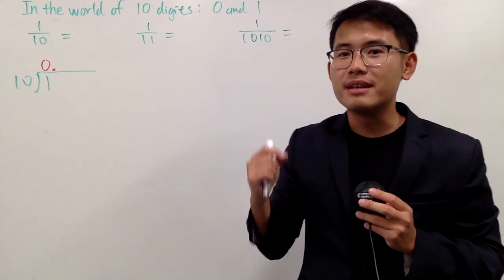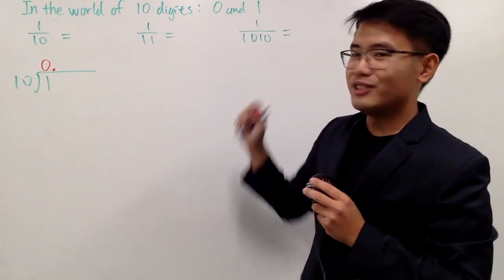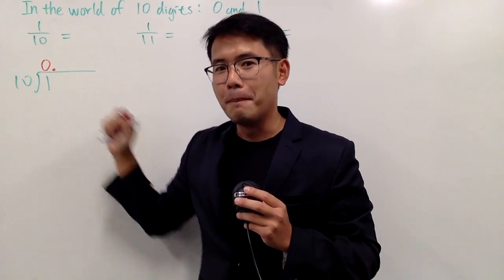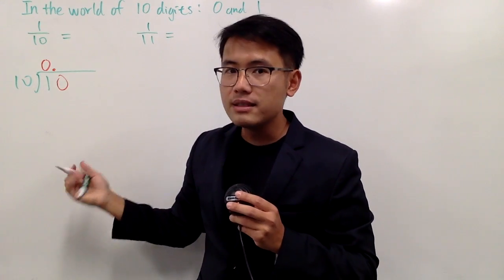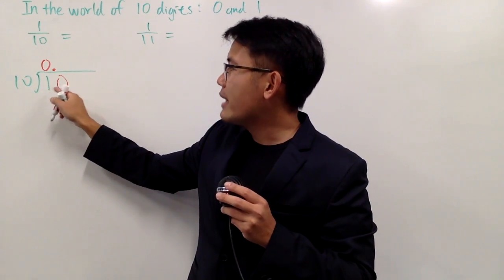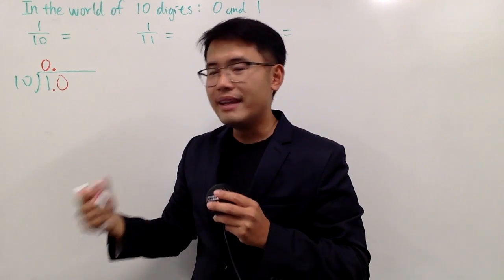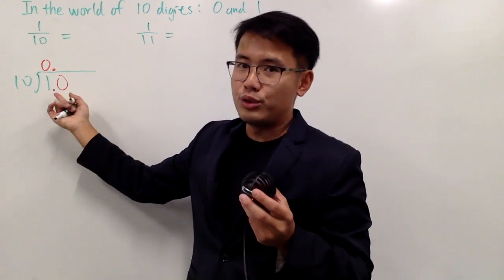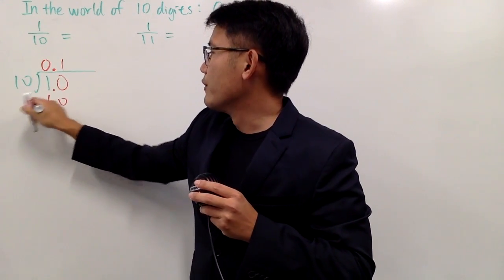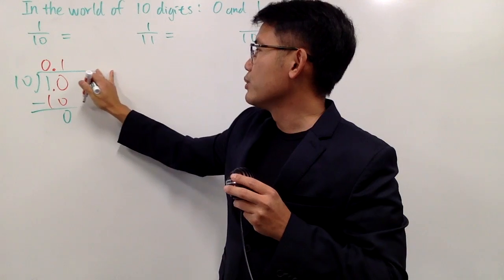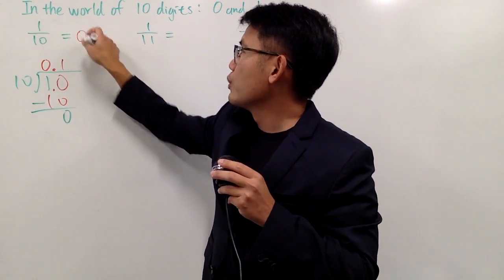You don't call this the decimal point, because decimal means you have 10 digits to work with. Here we only have 2 digits, so this is the binary point. When you put down this point, you can put a zero right here. What you are saying is 1.0 is the same as the original 1. Then 10 goes into 10 — it's just 1 time. 1 times 10 is 10. The remainder is 0, so we are done. In other words, 1 over 10 is just 0.1.